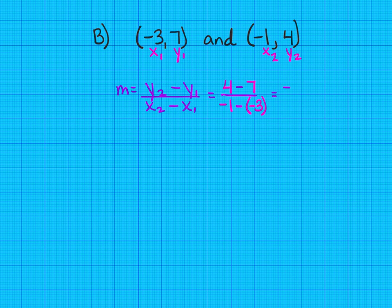4 minus 7 is -3. Negative 1 minus negative 3 is like saying negative 1 plus 3, which is 2. And so our slope is -3/2. It won't reduce any further. We'll leave it as an improper fraction and we're finished.